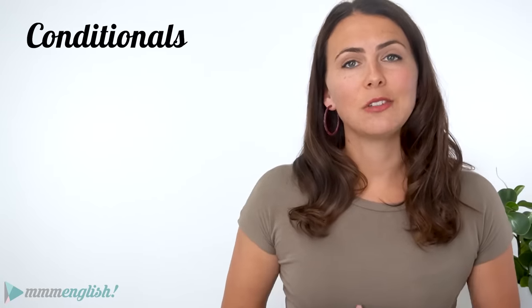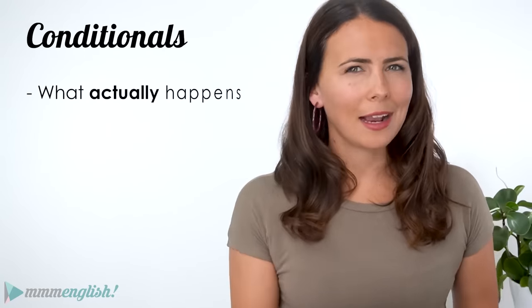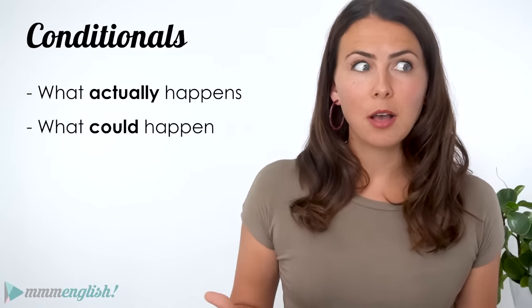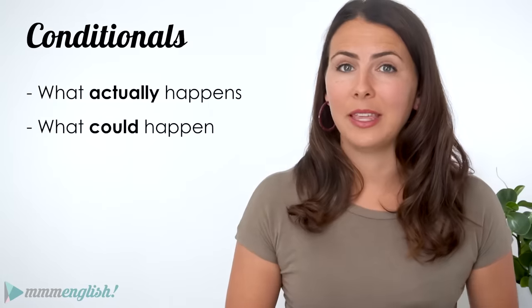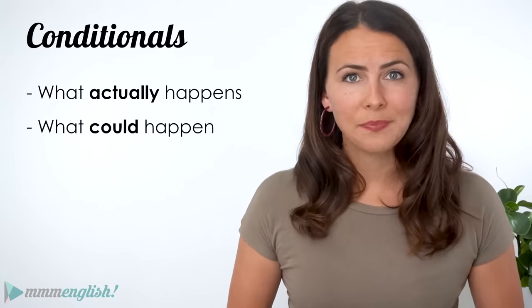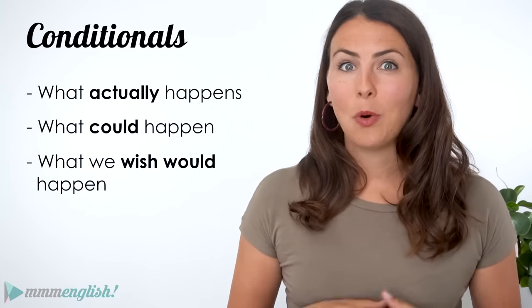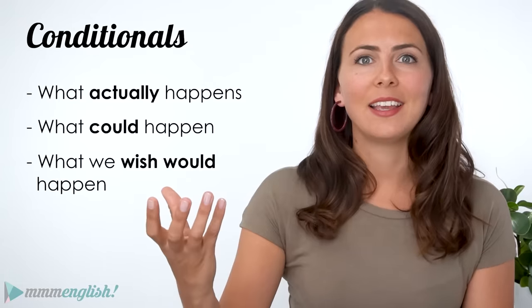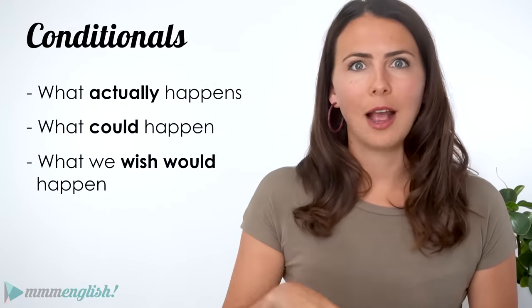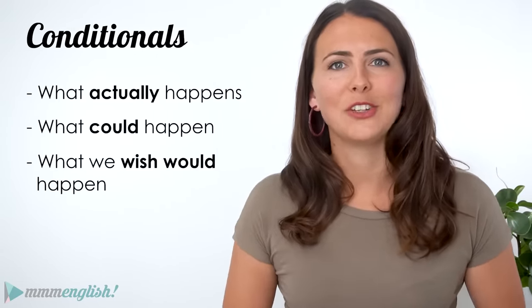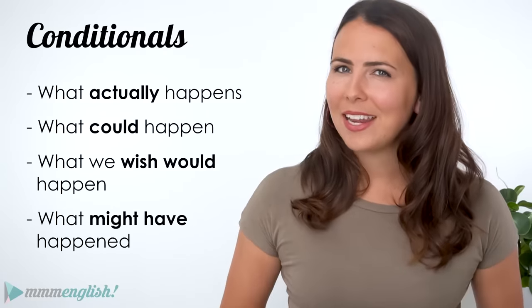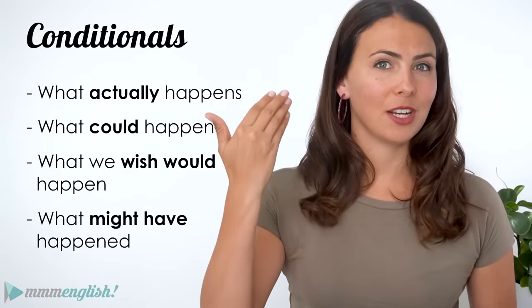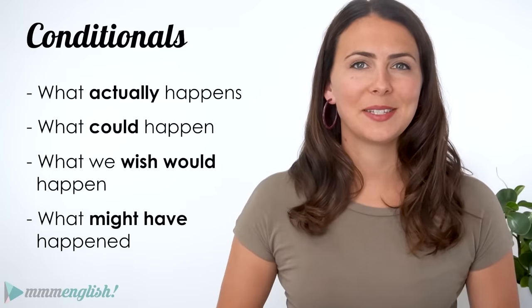We use conditional sentences to explain what actually happens, what could happen — a possible and likely outcome in the future — what we wish would happen, so imagining a different outcome for our present situation, and what might have happened, so thinking about a different outcome that happened in the past.